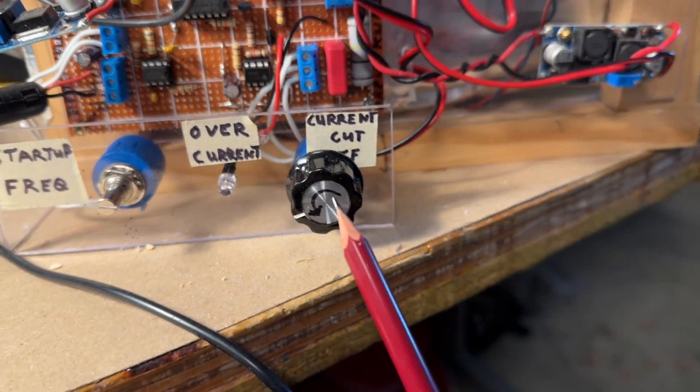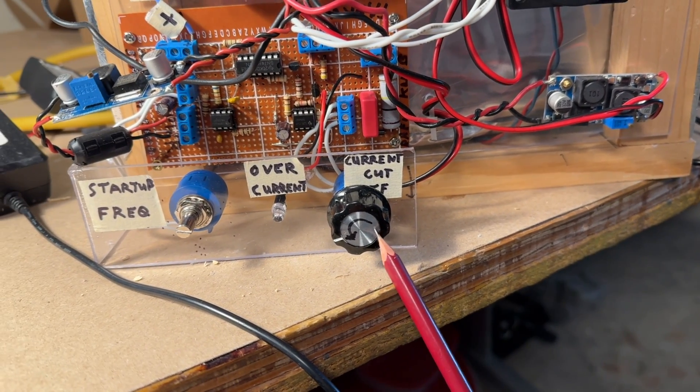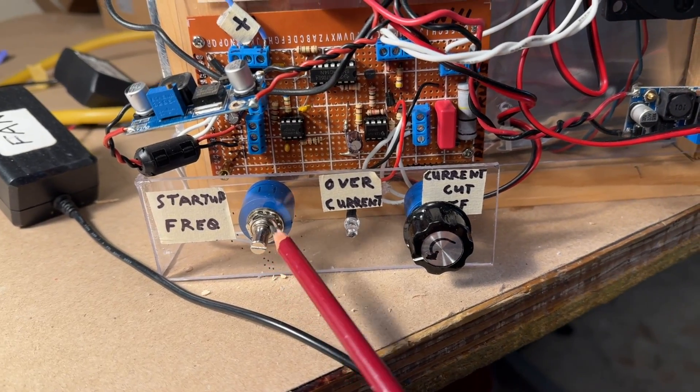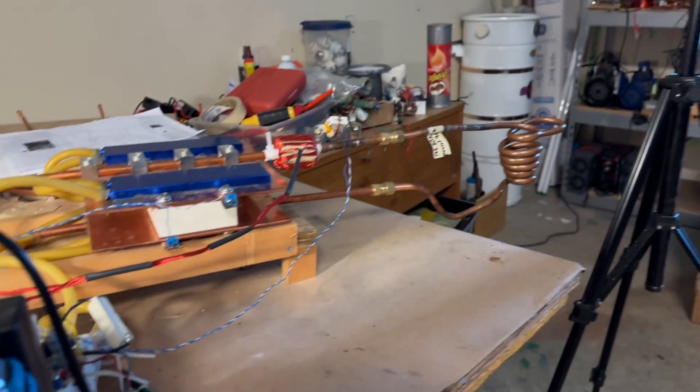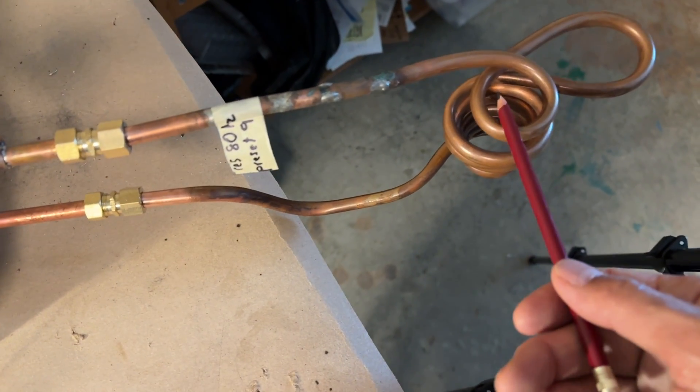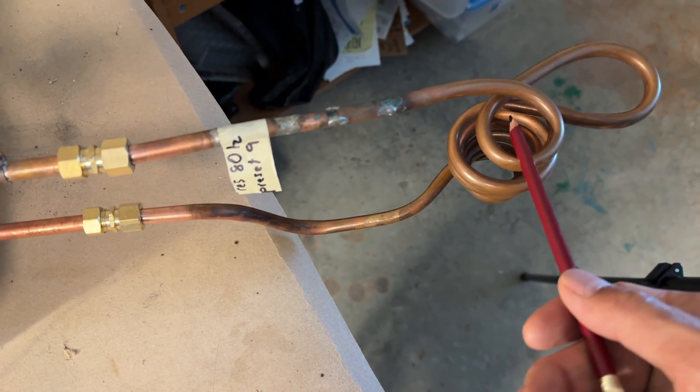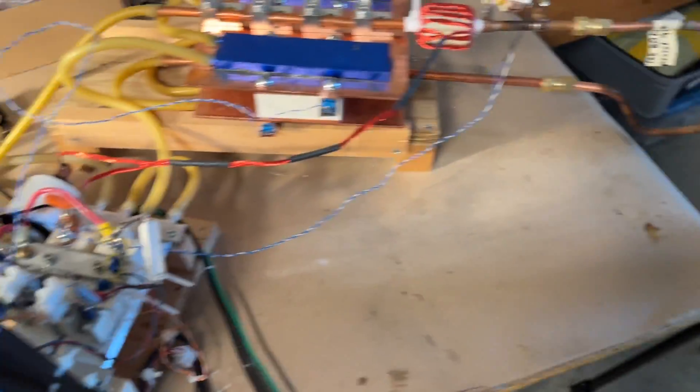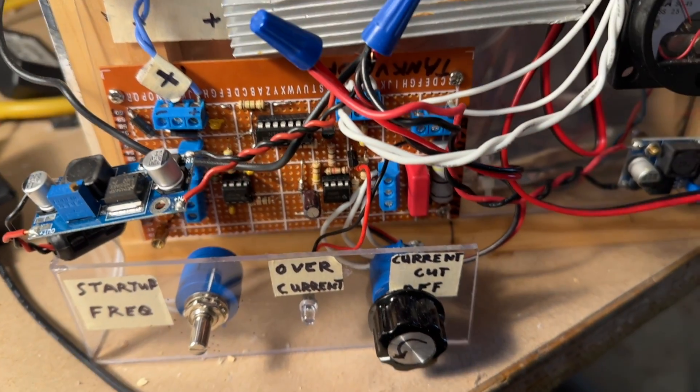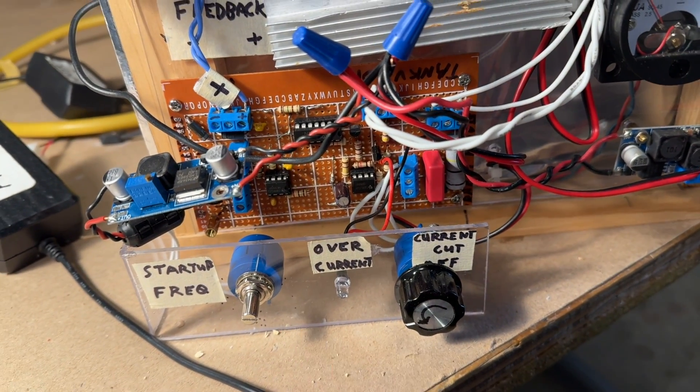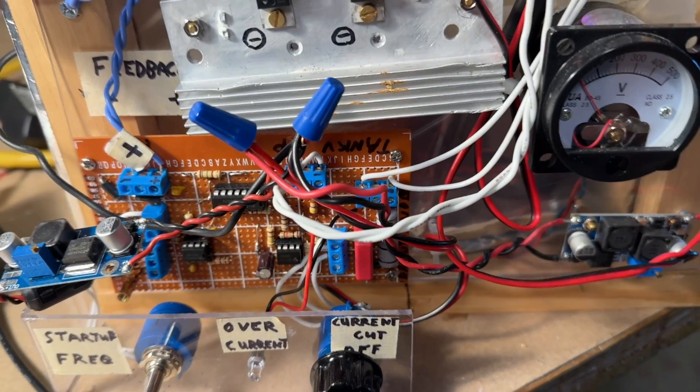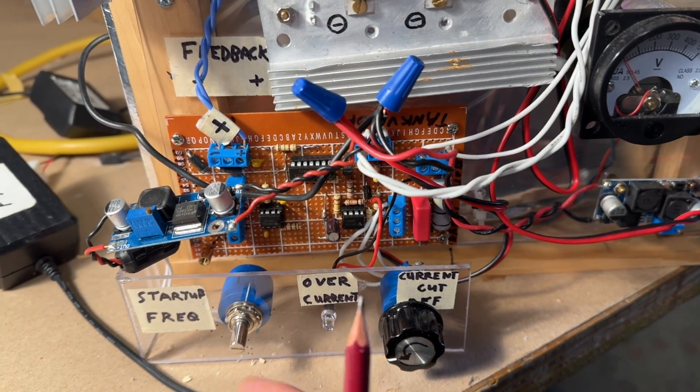You can set your cutoff for how much current you want, your maximum amount of current here. And you can set your startup frequency because different sized coils like the bigger coil will have a lower frequency. This one resonates around 80 kilohertz and the bigger coil that I showed you earlier resonates about 50 kilohertz. You want to set your startup frequency above the resonant frequency of your tank. So say the coil resonates at 50 kilohertz, you want to set that at 60 kilohertz.